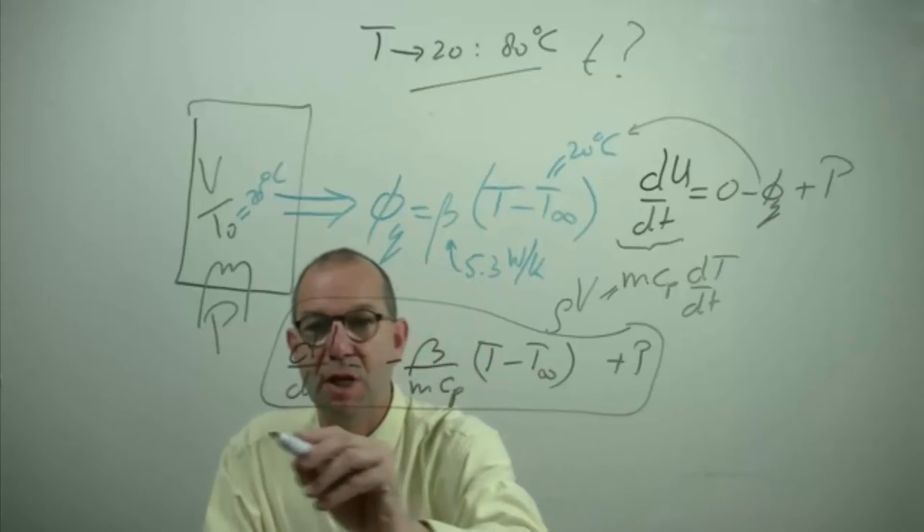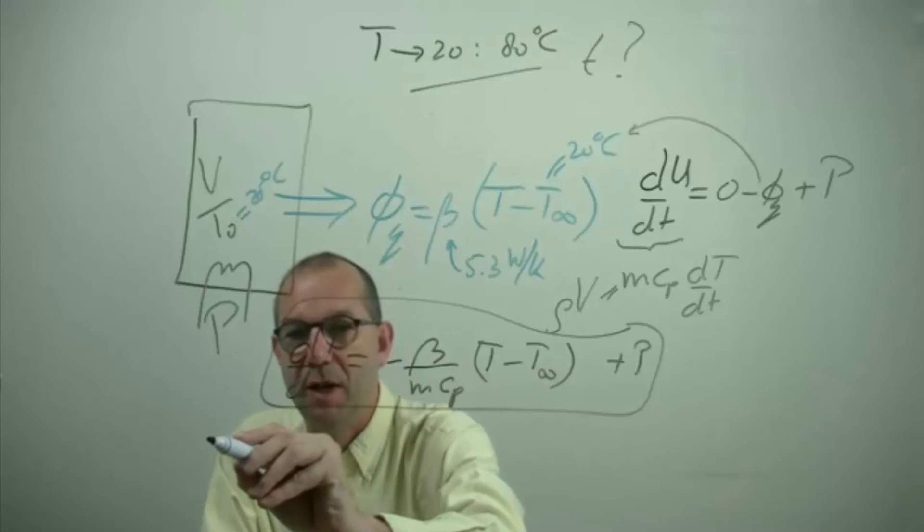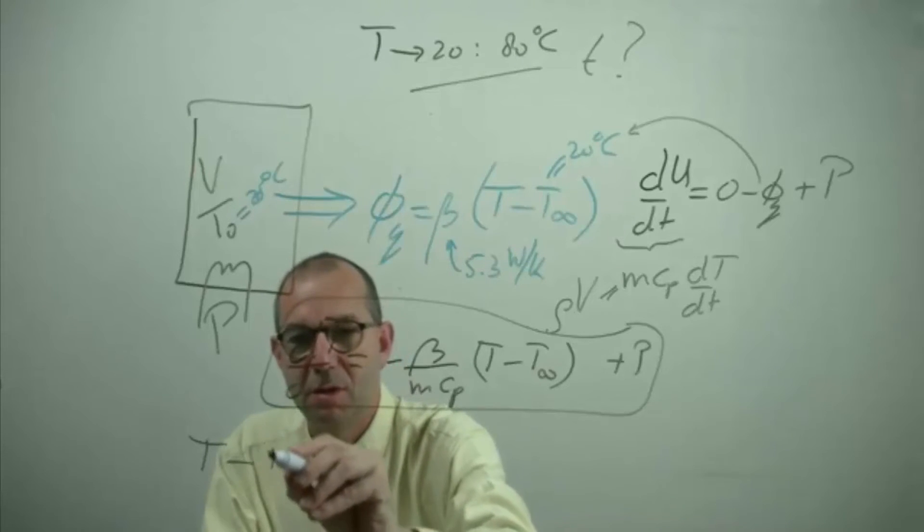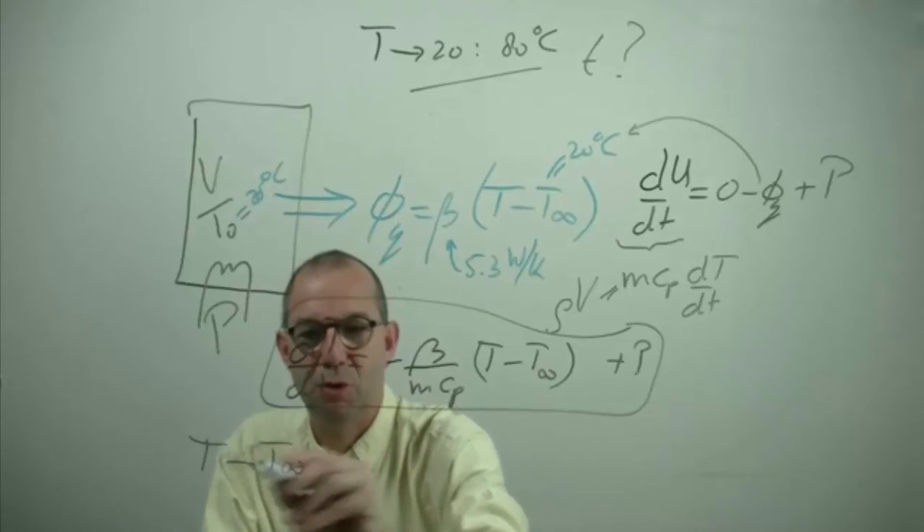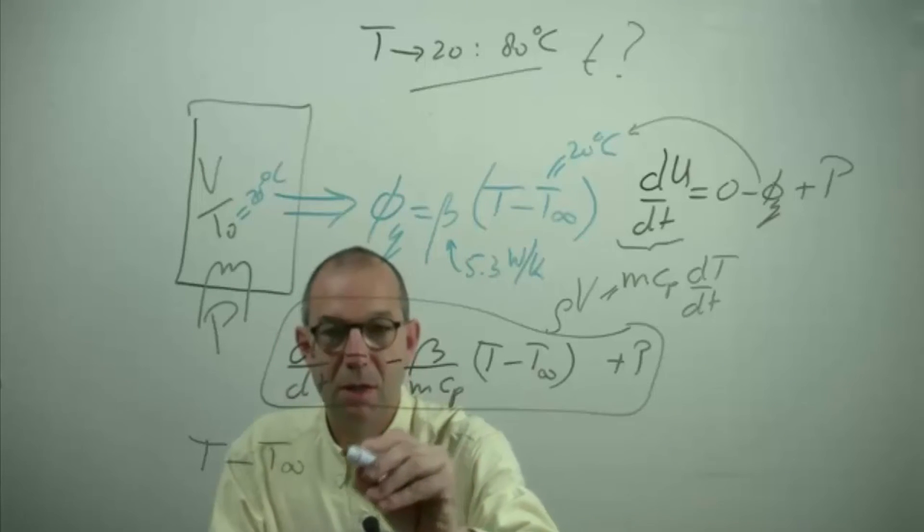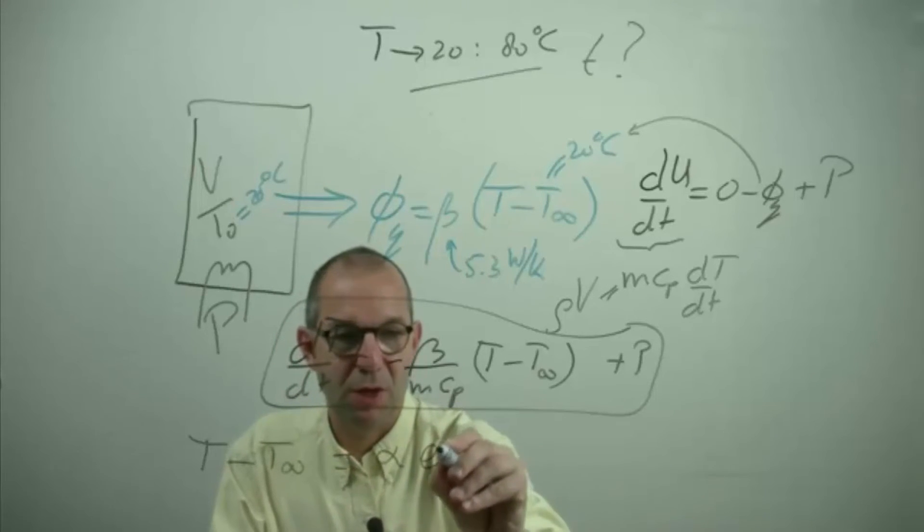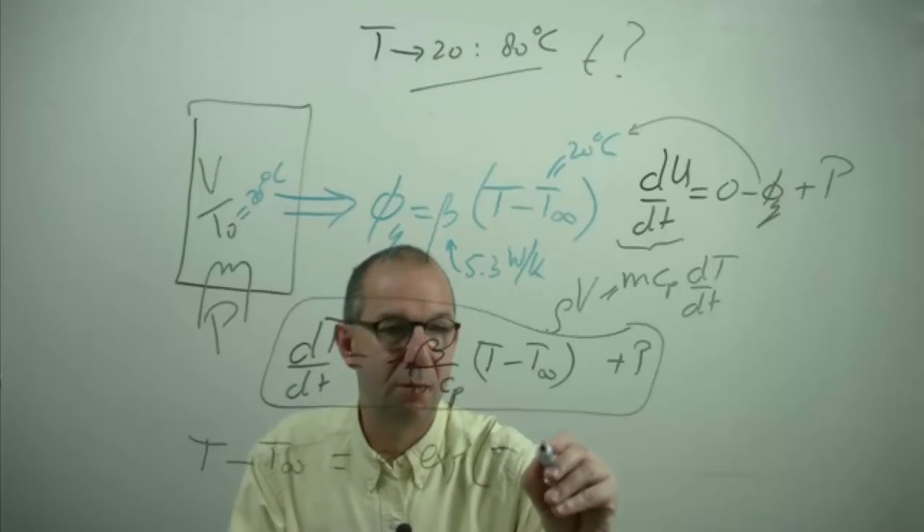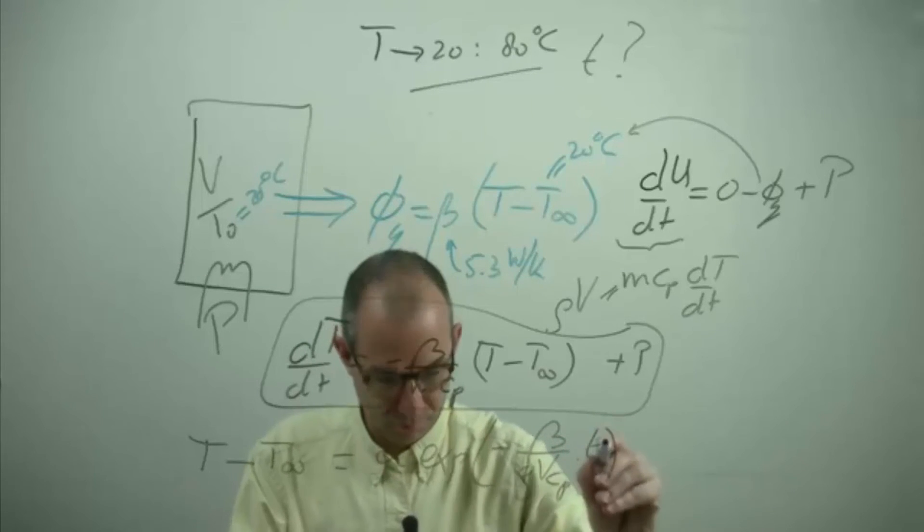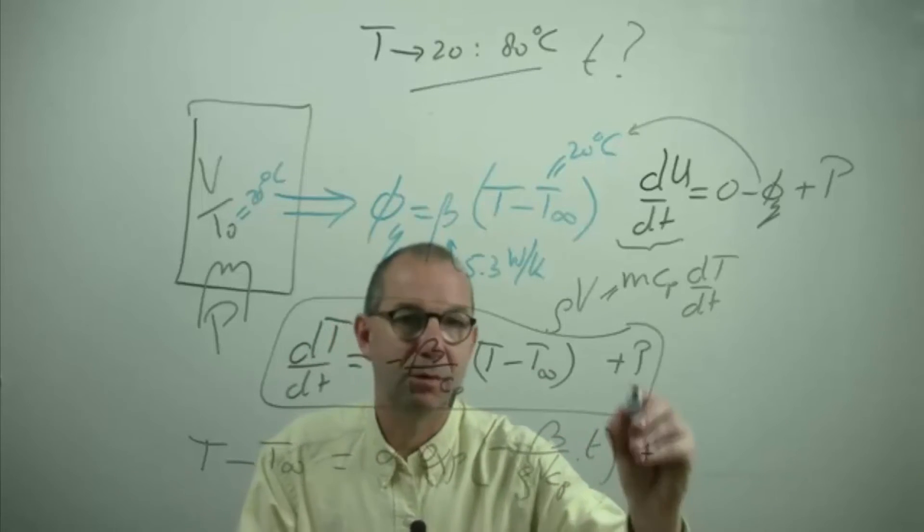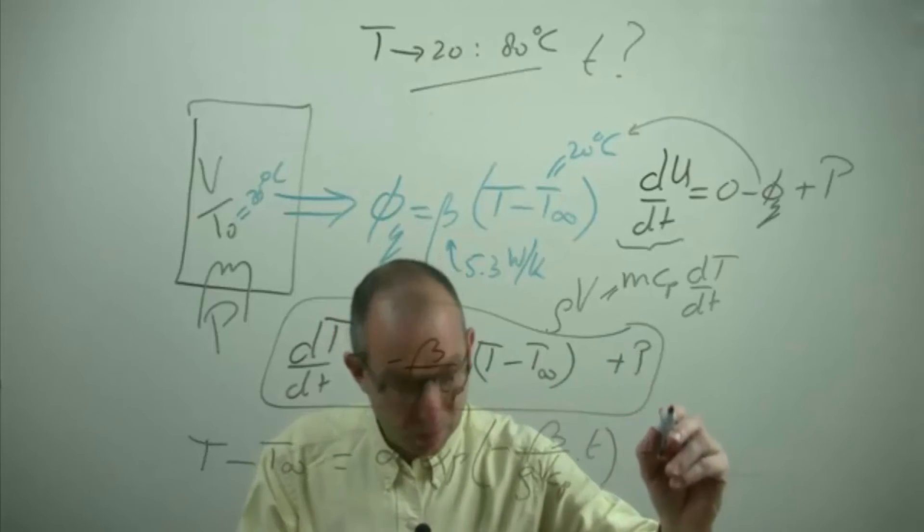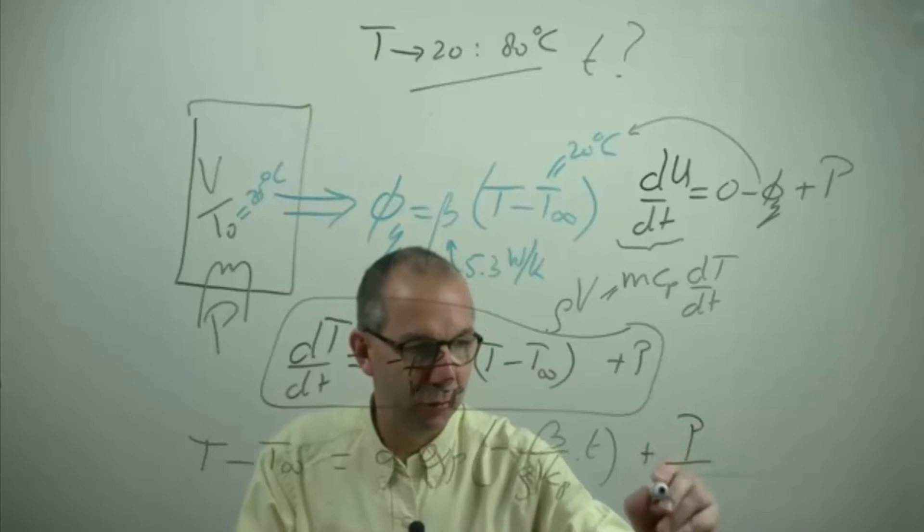You can try and work out the solution yourself or you can try and look that up via internet and you will get that the temperature with respect to the surrounding temperature equals some constant times exponential function which has a coefficient minus beta rho V cp times time plus I need to divide this plus P over beta.